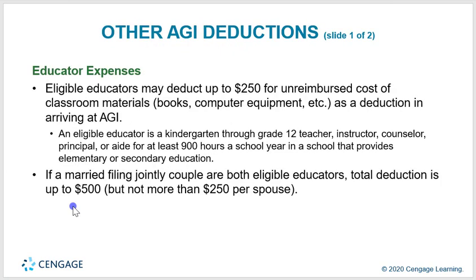Other AGI deductions include educator expenses. Eligible educators may deduct up to $250 for unreimbursed costs of classroom materials, books, computers, equipment, etc. An eligible educator is a kindergarten through grade 12 teacher, instructor, counselor, principal, or aide who works at least 900 hours a school year. If a married filing jointly couple are both eligible educators, the total deduction is up to $500, but not more than $250 per spouse.